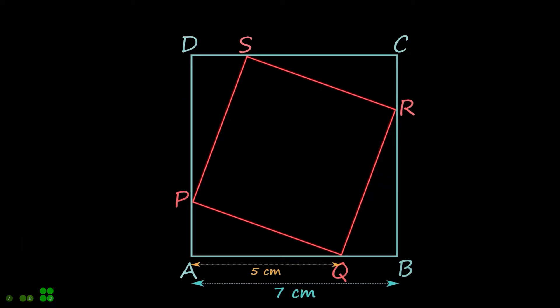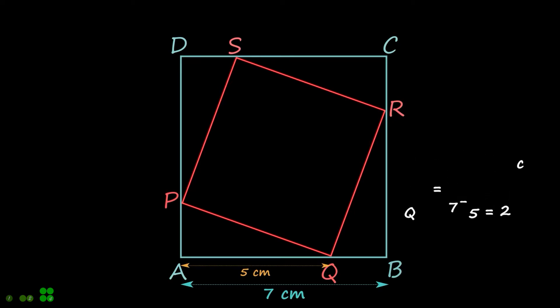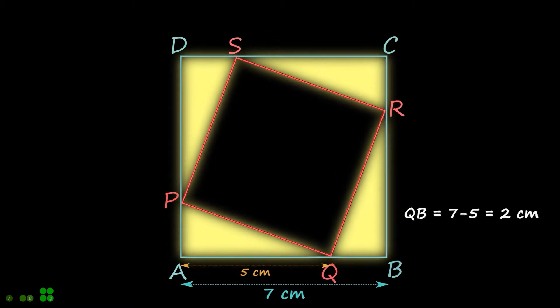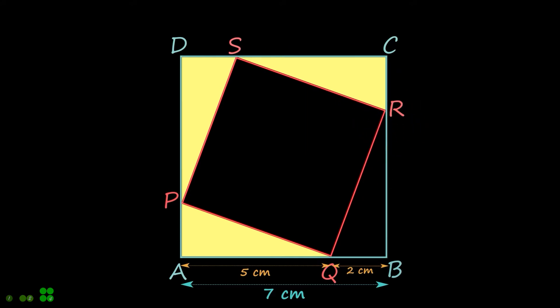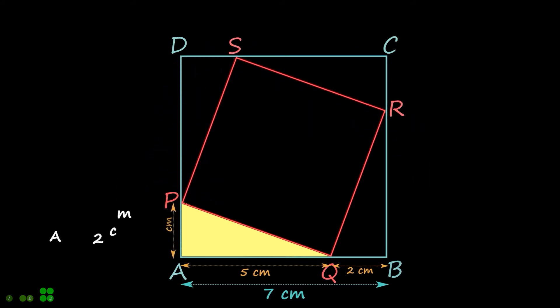For the given values, length QB must be 7 minus 5, i.e. 2 cm. These four triangles are identical, as shown. This means the length AP is also 2 cm.